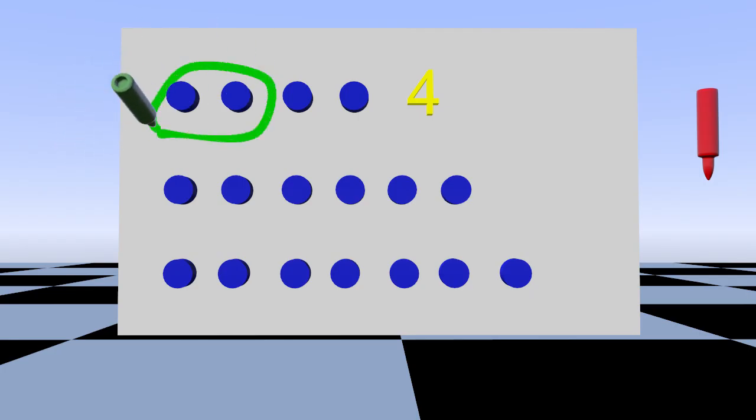This is a pair and this is a pair, so four is an even number because it can be put into equal pairs.